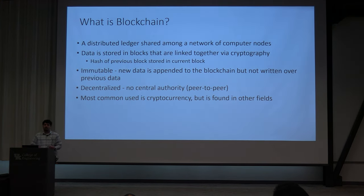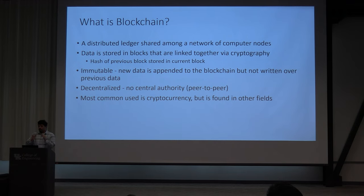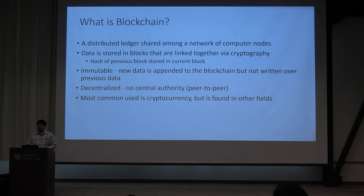Basically, we have to ask what is blockchain. Blockchain is basically a distributed ledger shared amongst a network of computer nodes. How the ledger works is this data is collected and stored in these blocks. These blocks are linked together using cryptography, so the hash of the previous block is included in the current block. This makes the data immutable, meaning new data can be appended to the chain, but it is never written over. Once a group of transactions are collected, they are put into a block and stored onto the blockchain but do not overwrite any previous data. Anyone is able to go back and look at previous transactions.